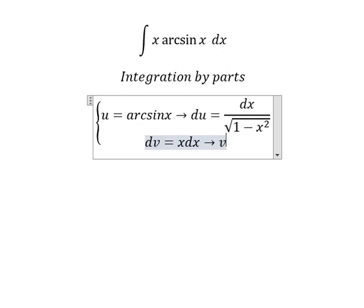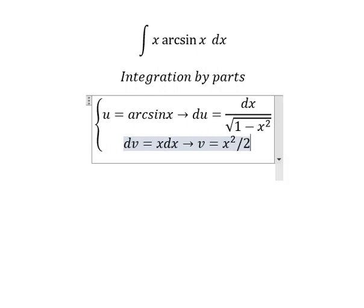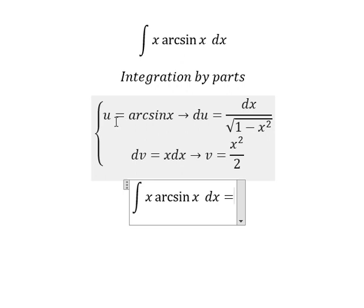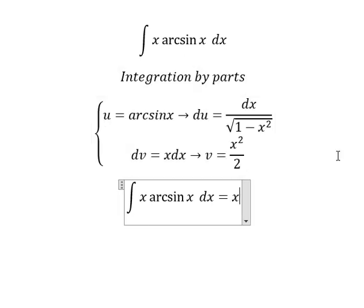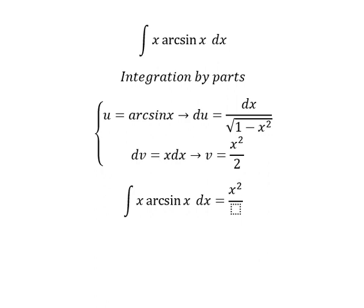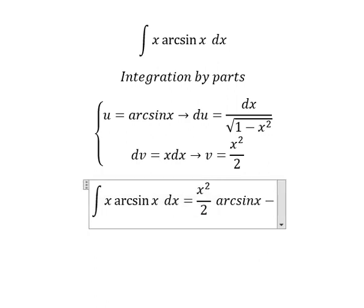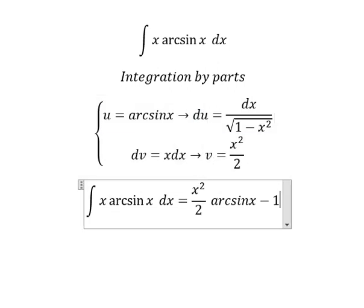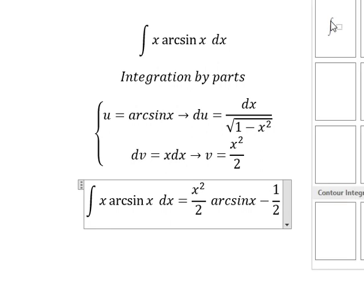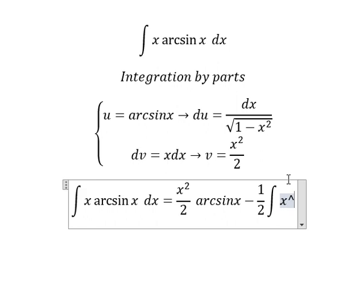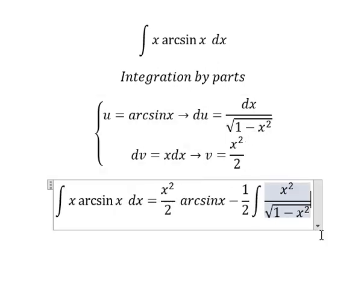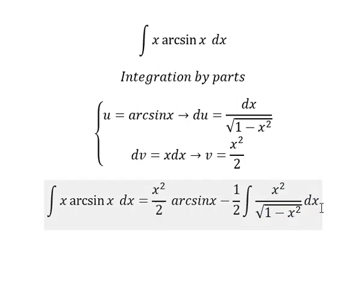We have v equals s over 2. So we have u multiplied by v minus the integral of v du, which gives us one over two. Then we have the integration of s squared over the square root of one minus s squared.